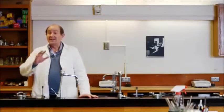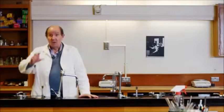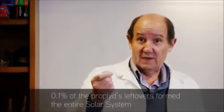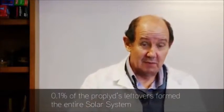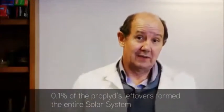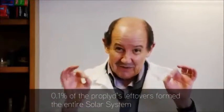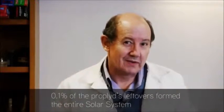About 99% of all the material in the proplid went into the sun. 99.9%, in fact. That leaves 0.1% for the rest of the solar system. All that stuff was orbiting around the sun, and amazingly, that tiny residue is what formed all the rest of the solar system.